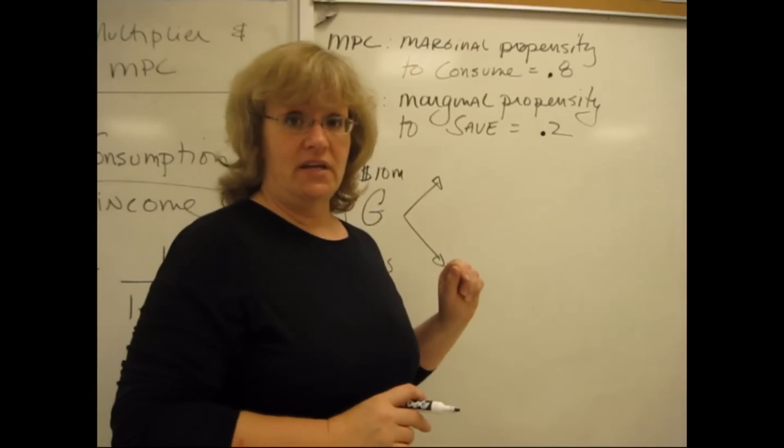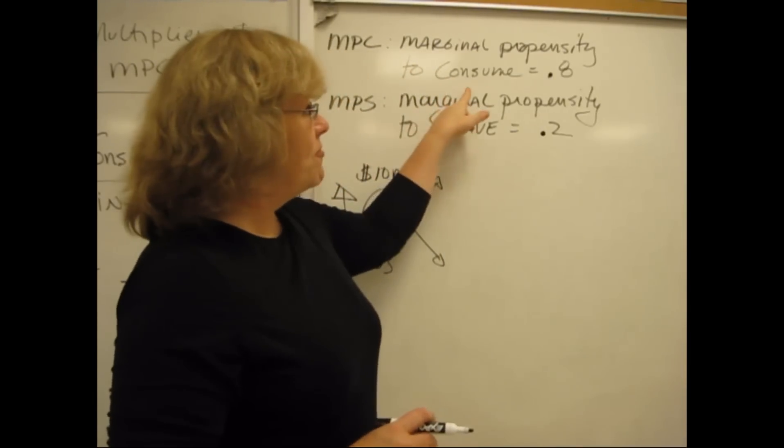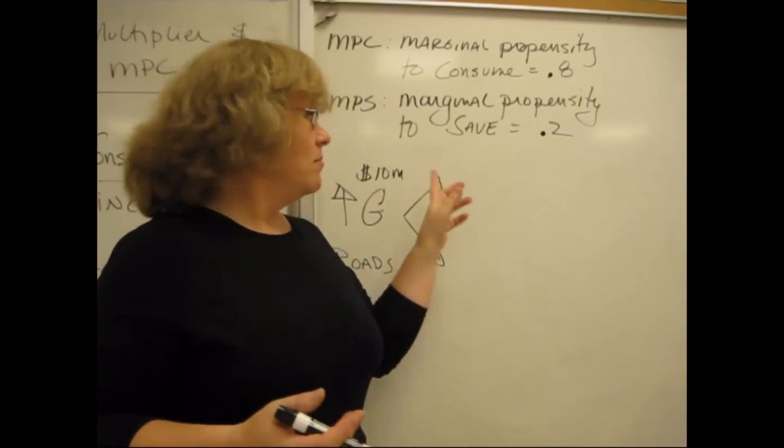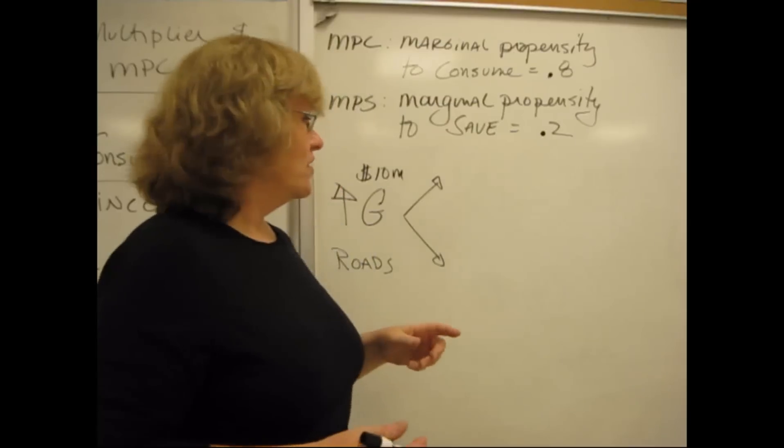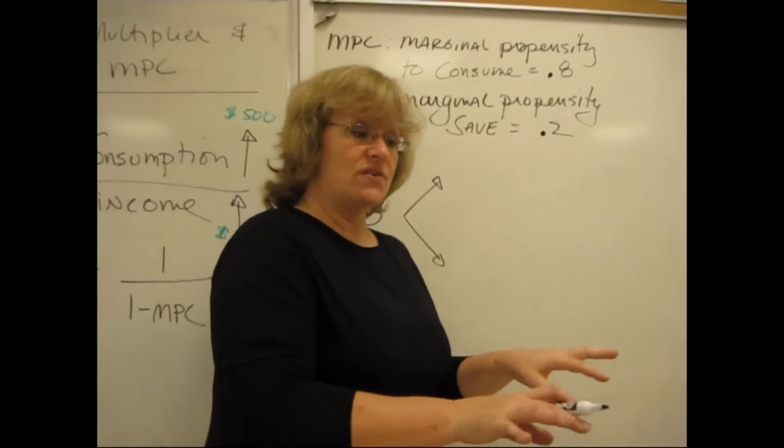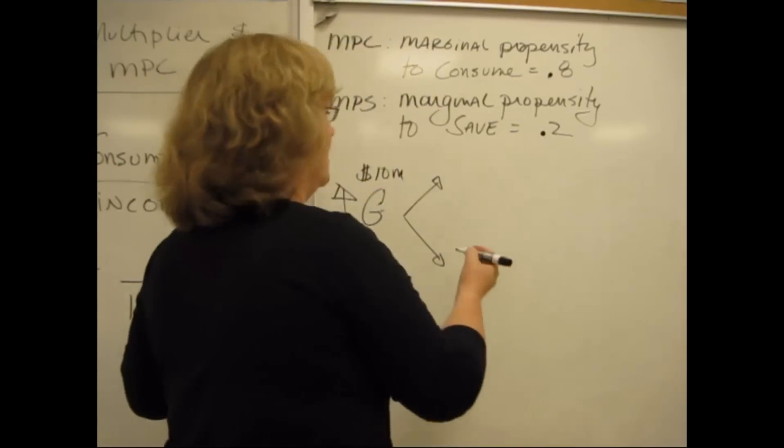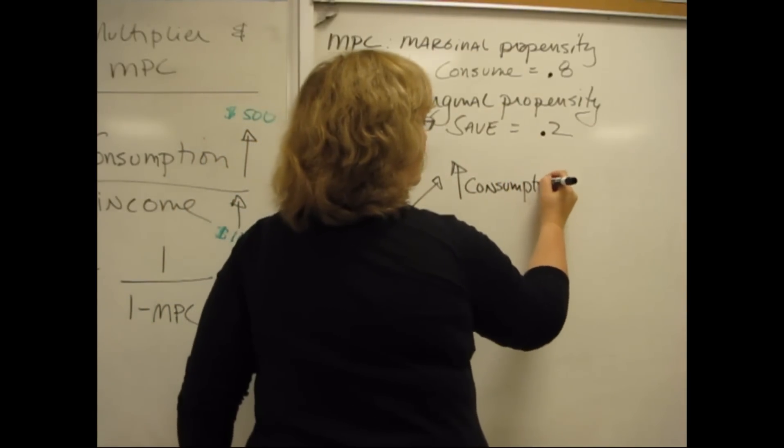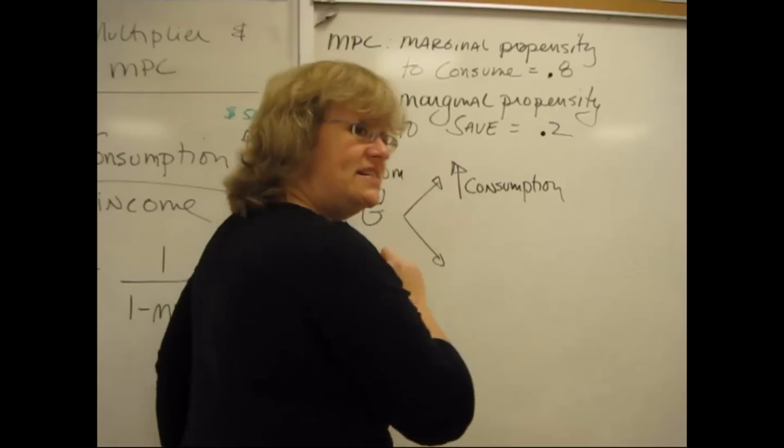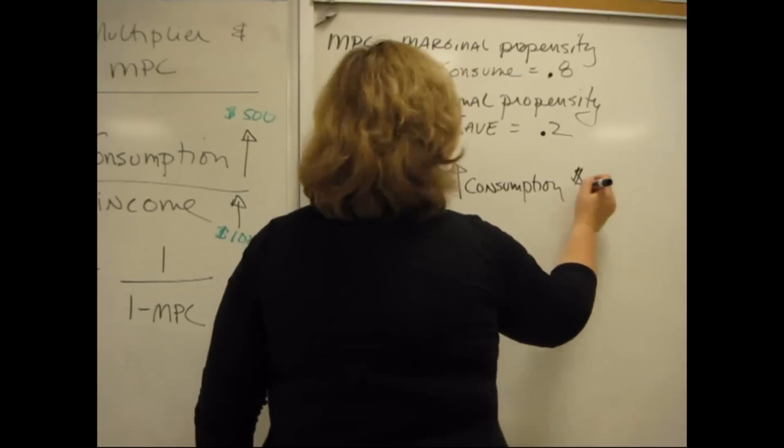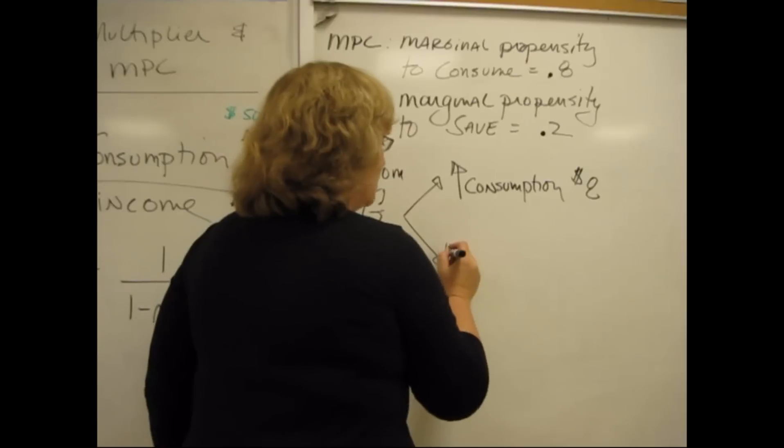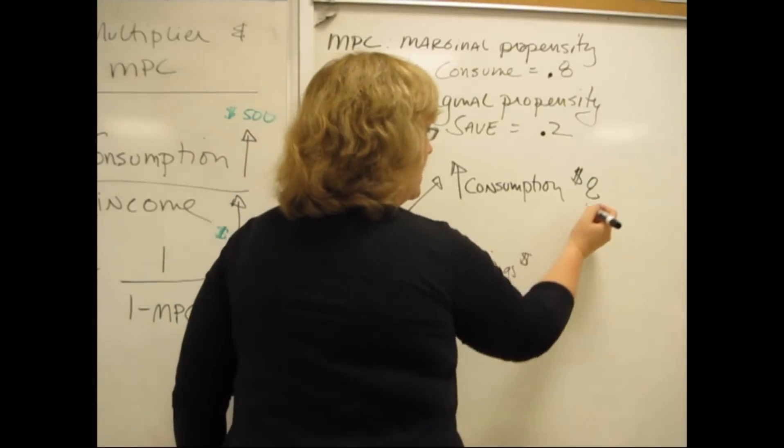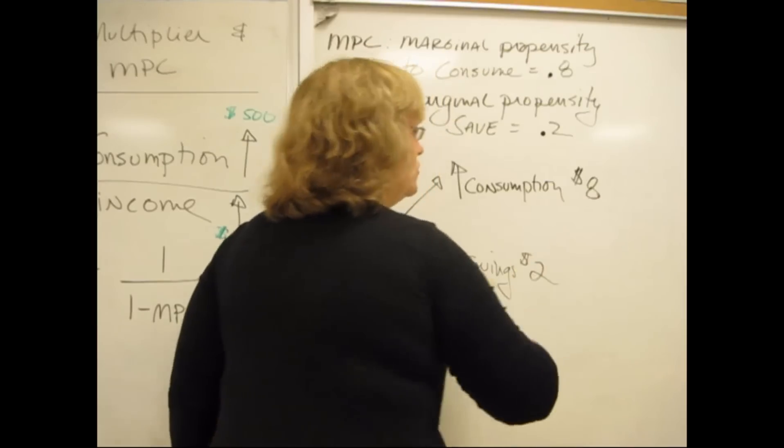They're going to spend some of it, and they're going to save some of it. The marginal propensity to consume tells me how much they're going to spend, and the marginal propensity to save will tell me how much they'll save. So out of this 10 million dollars, as it feeds its way into the community, we're going to see an increase in consumption of 0.8 of that. That's 8 million of the 10, and we'll see an increase in savings of the rest. These folks, on average, will save 2 million.